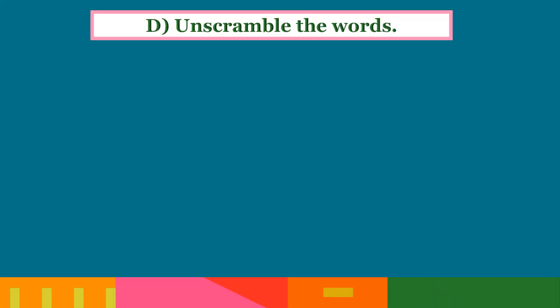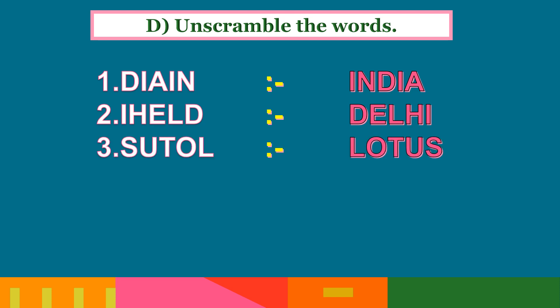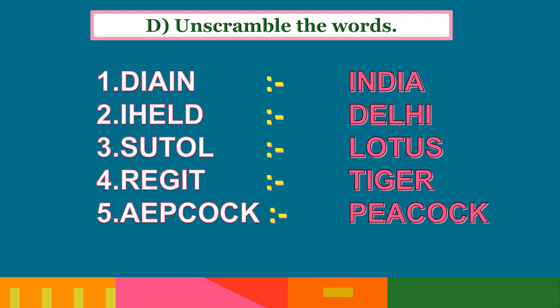Let's scramble the words. First, D-I-A-I-N means I-N-D-I-A, India. Second, I-H-E-L-D is D-E-L-H-I, Delhi. Third, S-U-T-O-L means L-O-T-U-S, Lotus. R-E-G-I-T is T-I-G-E-R, Tiger — our national animal. A-E-P-C-O-C-K is P-E-A-C-O-C-K, Peacock — our national bird.